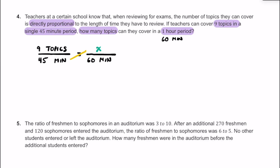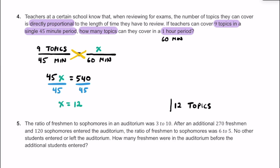Using cross products, 45 times x equals 45x, and 9 times 60 is 540. Dividing both sides by 45, the 45s cancel, so x equals 540 divided by 45, which is 12. If the relationship is proportional and they can cover 9 topics in 45 minutes, then if they had a full hour, we'd expect them to cover 12 topics.